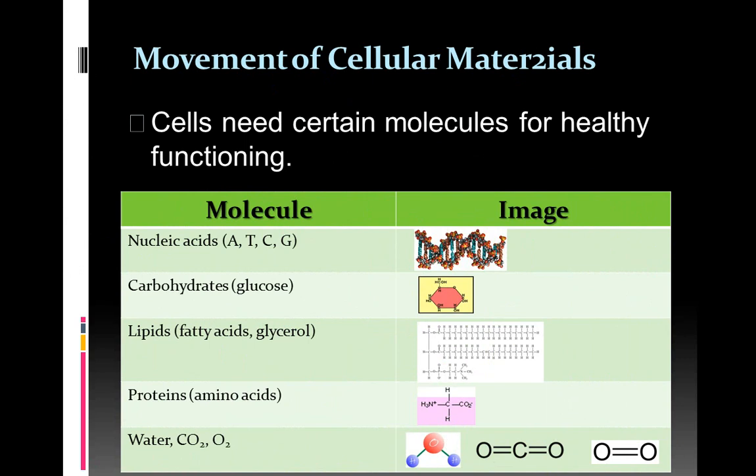So materials that are needed by the cell move through the cell membrane. And so this is just a graphic that shows the different kinds of molecules that our cells need. Most of these we would call biomolecules. So the nucleic acids, carbohydrates, lipids, and proteins would be the four major biomolecules. And in addition to those, you'll see that water, carbon dioxide, and oxygen are also needed for healthy functioning.